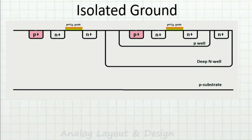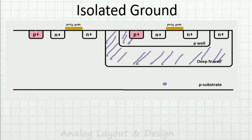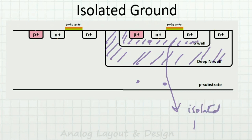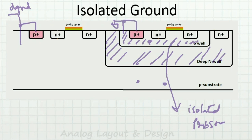So how do I isolate the ground? I put a deep N-well into the P-substrate and form a separate P-substrate region inside it. This inner P-substrate is not connected to the outer substrate. This isolated P-substrate region can be connected to a separate analog ground via its own substrate tab, giving a true AGND isolated from DGND. Please watch the deep N-well video for a detailed explanation.